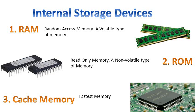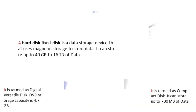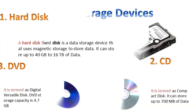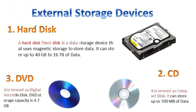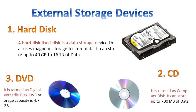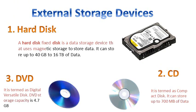Cache memory, also called CPU memory, is a high-speed static random access memory that a computer can access more quickly than its regular RAM.